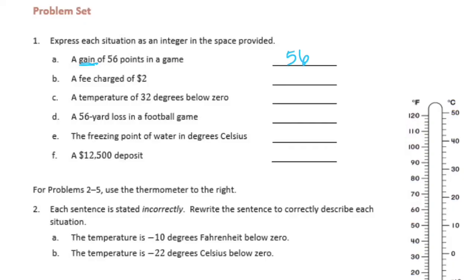Part b: a fee charged of two dollars. If someone charges you two dollars you're down two dollars, so that's negative two dollars — you have to put the negative sign. Part c: a temperature of 32 degrees below zero — 'below' means negative 32. Part d: a 56 yard loss in a football game — you lost, so that's negative 56.